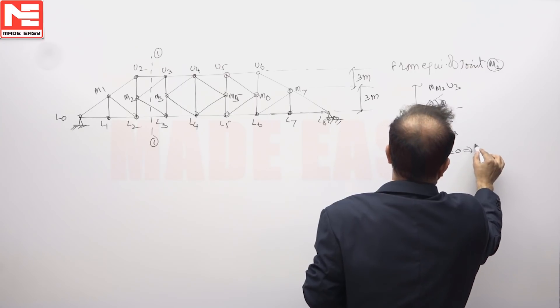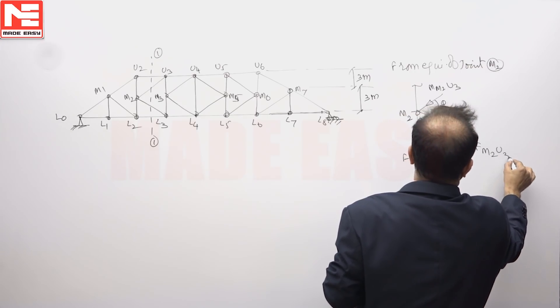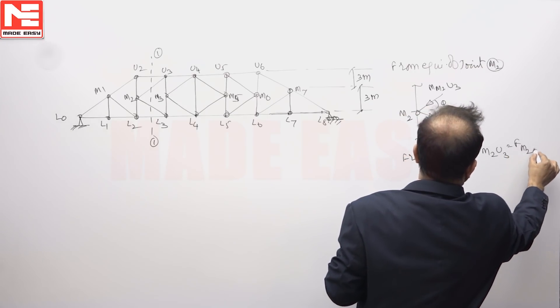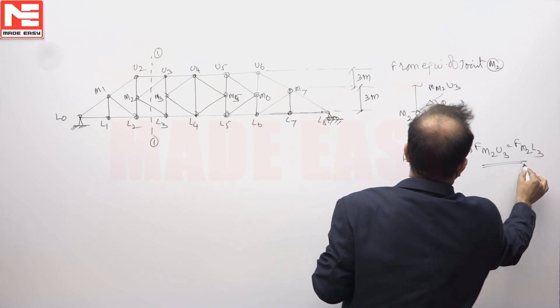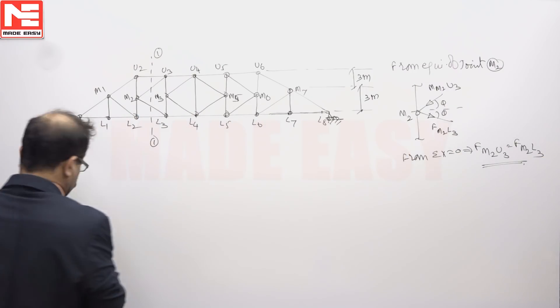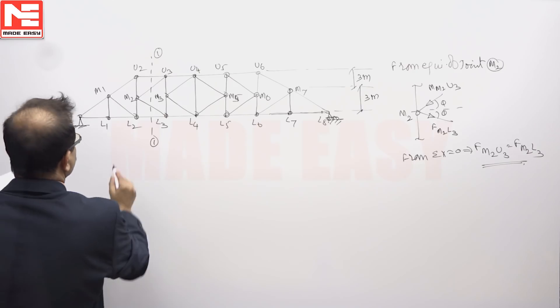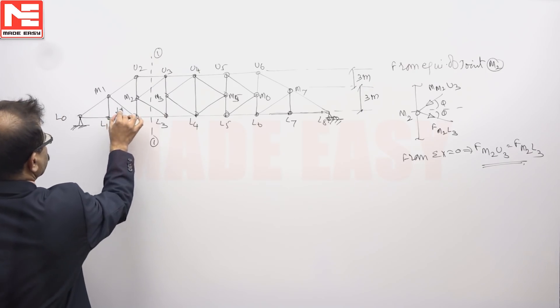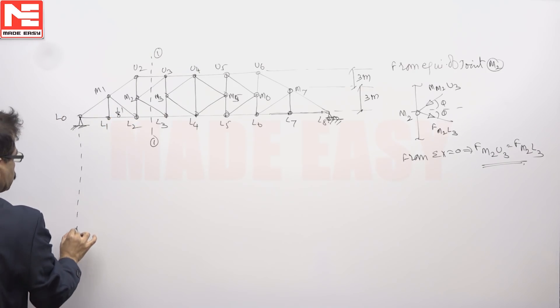From sigma x equals 0, FM2 U3 must be equal to FM2 L3. First, having confirmed that they have to be equal. Now you can keep the load somewhere here, you can look at the right side.